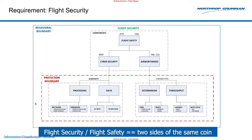The avionics security architecture has to protect the processing — which is the OFP, the flight software — has to protect the data at rest by encrypting it, and data in motion. The data in this case would be the mission plan.